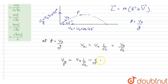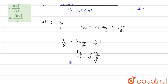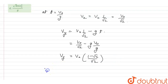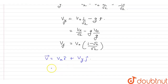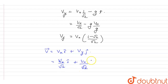So vy equals v0 sin 45 minus g times t. Substituting t equal to v0 upon g, this becomes v0 upon root 2 minus g times v0 upon g, giving vy equal to v0 times (1 minus root 2) upon root 2. The velocity vector is therefore vx i-cap plus vy j-cap.